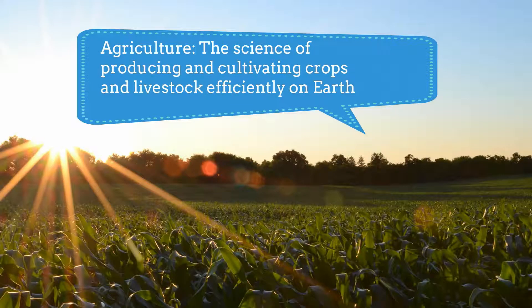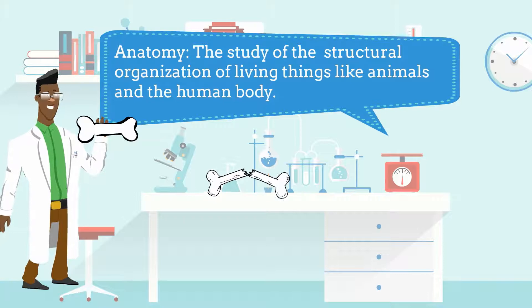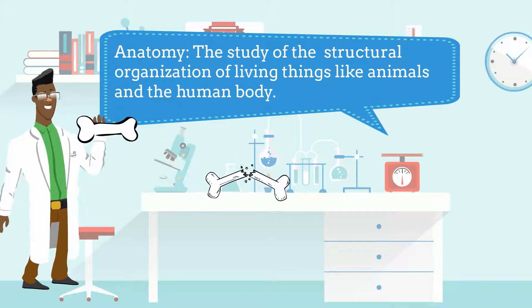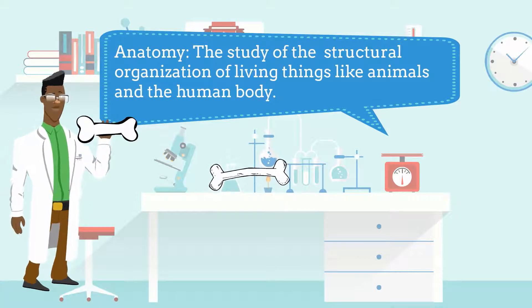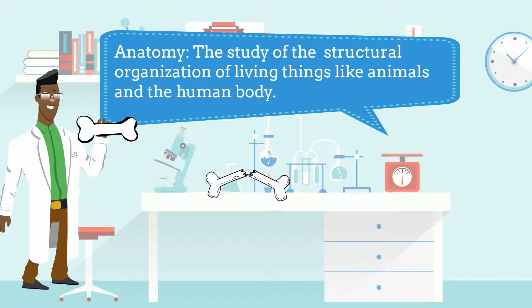Agriculture is the science of producing and cultivating crops and livestock efficiently on earth. Anatomy is the study of the structural organization of living things like animals and the human body.